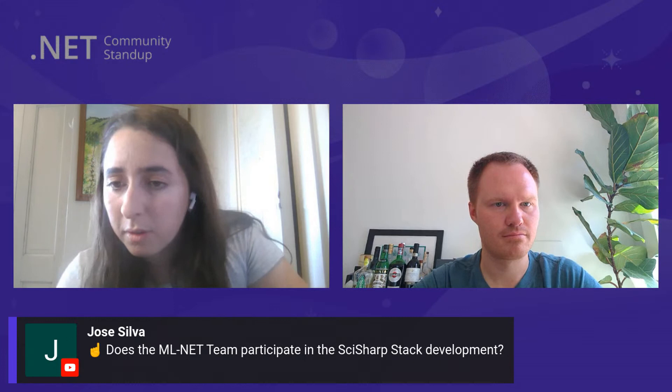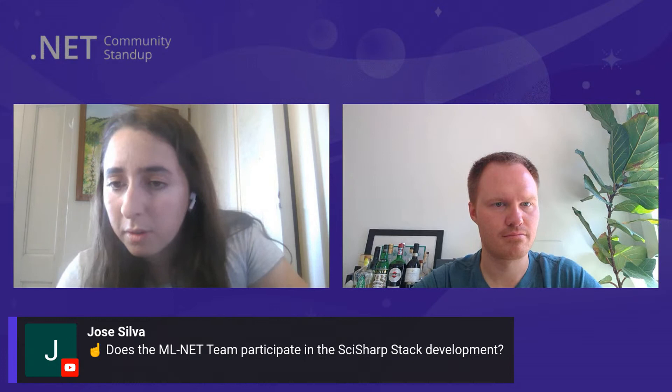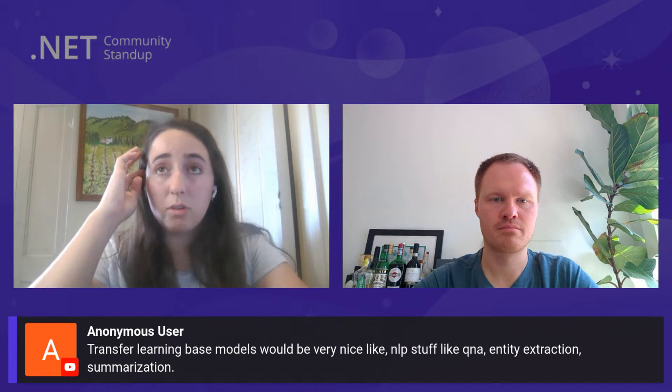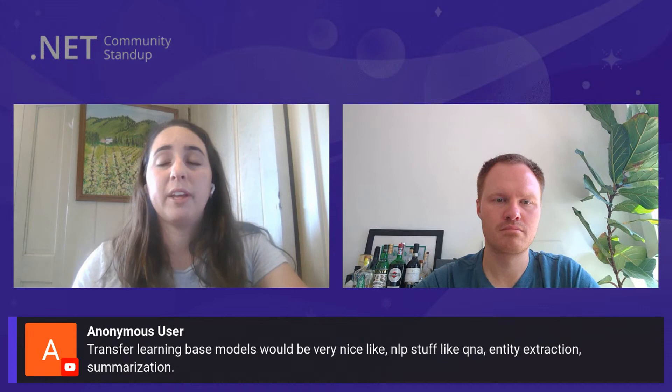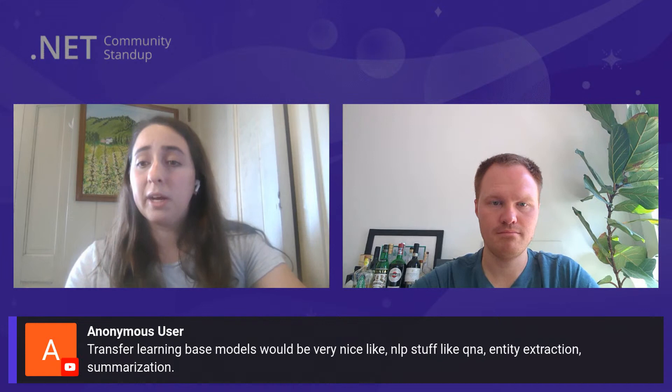Anonymous user says transfer learning-based models would be very nice — NLP stuff like Q&A, named entity extraction, and summarization. Right now our image classification API uses transfer learning, but I think that's the only area in ML.NET currently using it. It's totally possible to continue using transfer learning for other scenarios as well. On the NLP front, there are some open source projects that have started using BERT, and figuring out our BERT story is on our long-term roadmap — we know it's really popular for NLP.